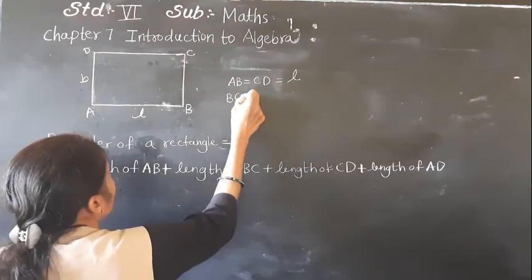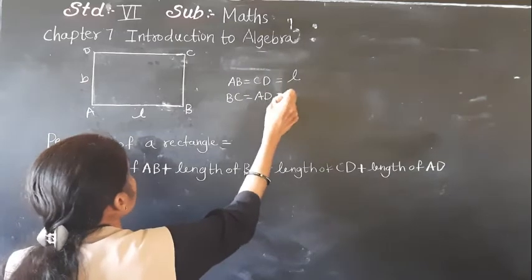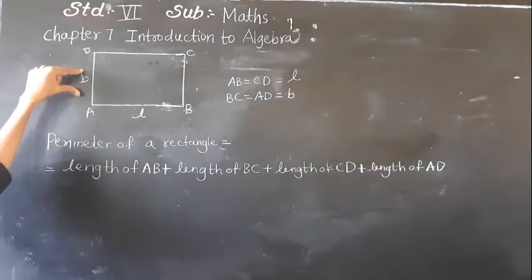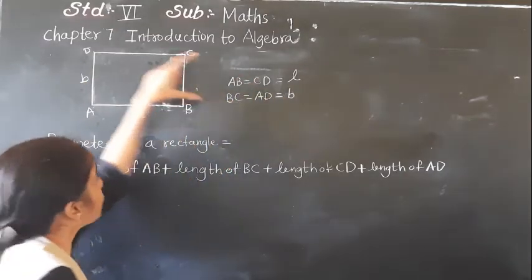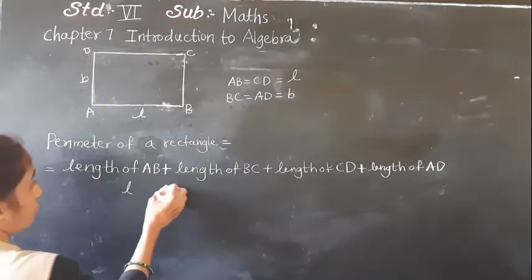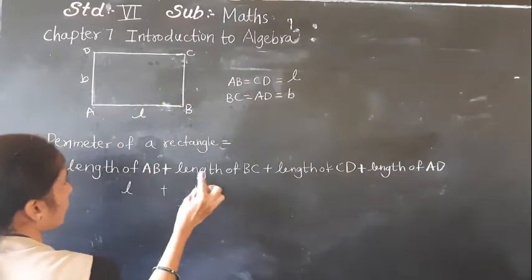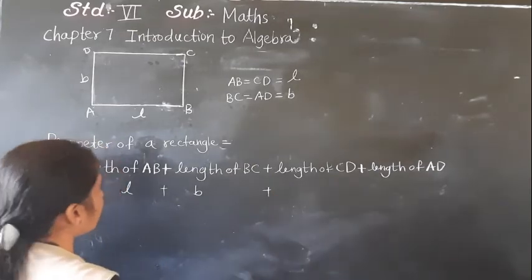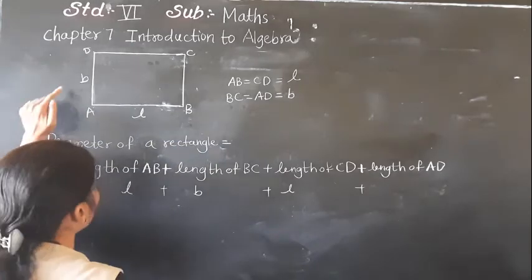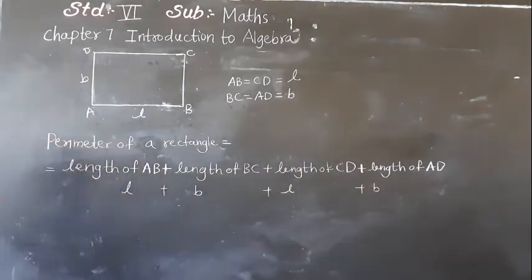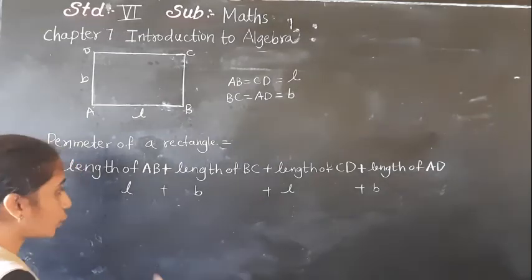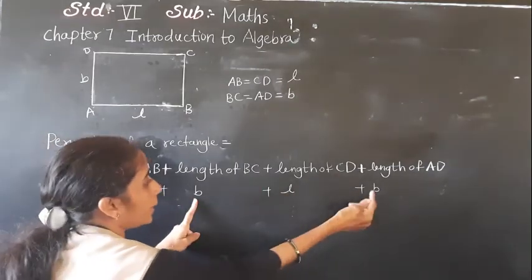So: AB is equal to CD is equal to L, and BC is equal to AD is equal to B. The perimeter becomes L plus B plus L plus B. We have 2 lengths and 2 breadths, giving us 2L plus 2B.